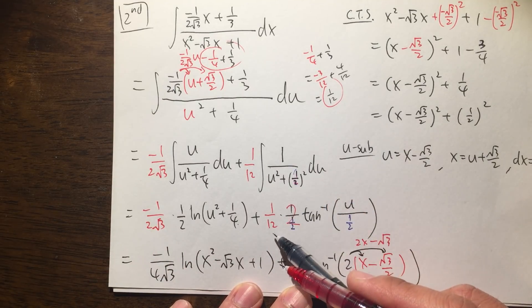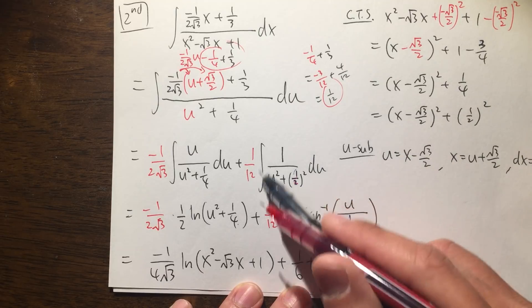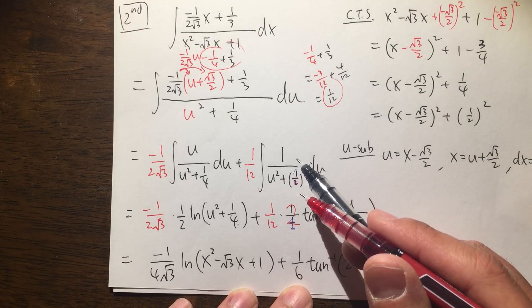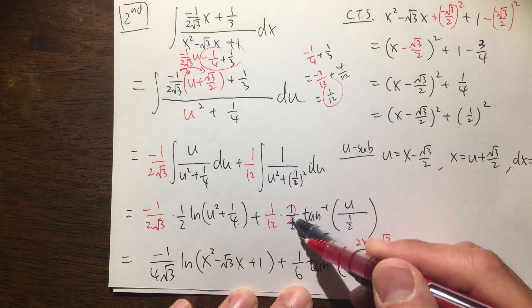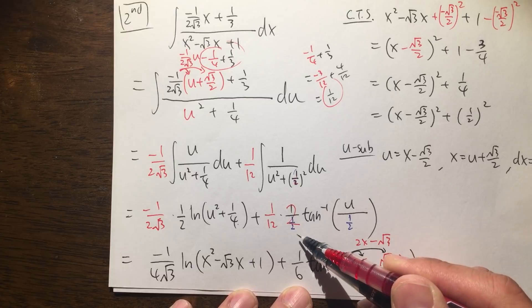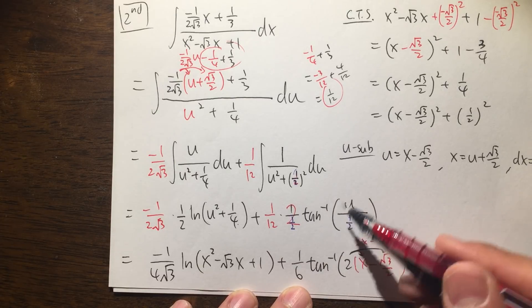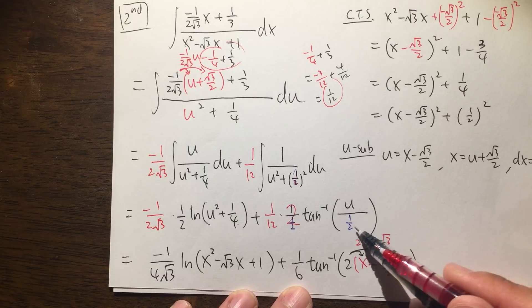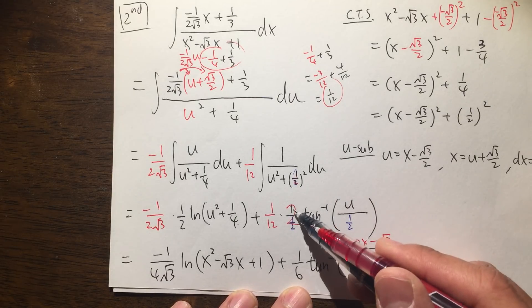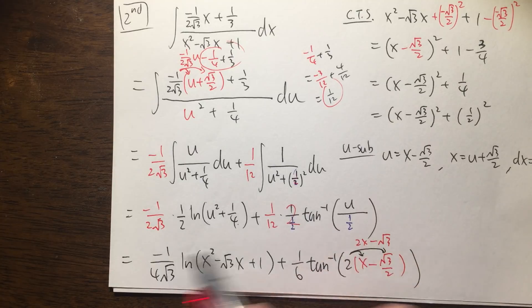But if you look at this part, 1 over 12 right here, and then this right here is going to be the inverse tangent formula for this integral. What we have to do is we have to do first 1 over a, which is this value, so it's 1 over 1 over 2, and the inverse tangent. And then we have this variable, which is u over a, which is once again 1 over 2. And then 1 over 1 over 2 is the same as 2.